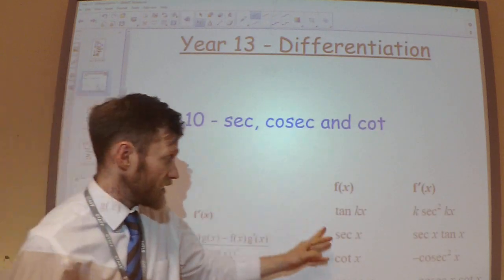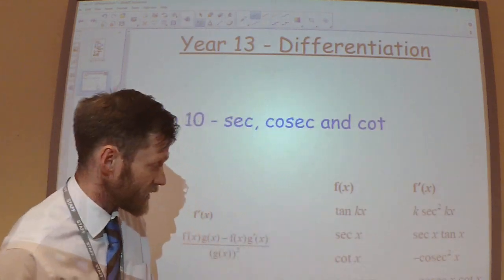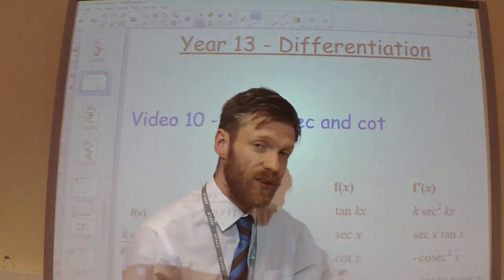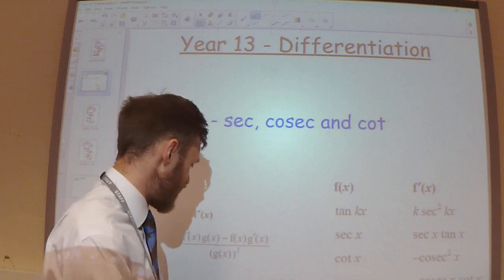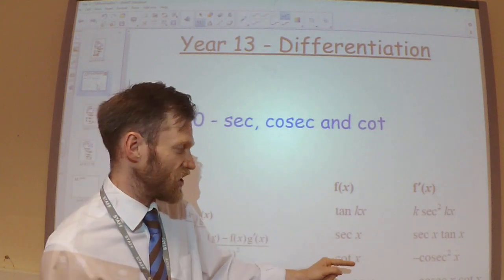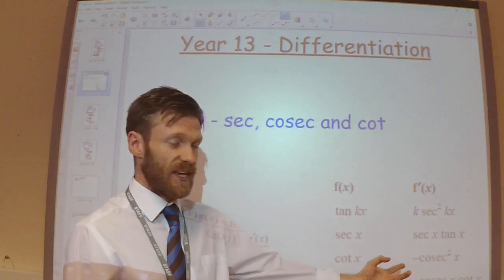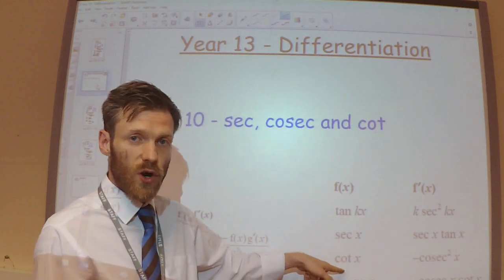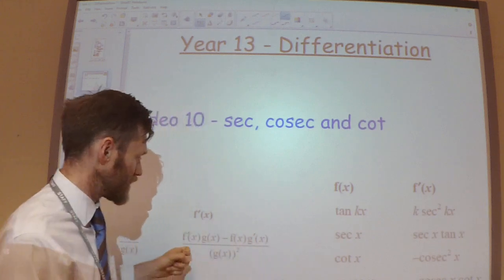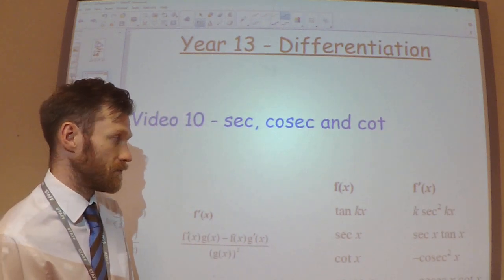So again, we've proved that sec differentiates to give sec x tan x. We've proved that cosec differentiates to give minus cosec x cot x. And I'm not going to do it in this video, but you can do it yourself if you want to prove that cot x differentiates to give minus cosec x squared. Just write cot as being cos over sine, and then do the quotient rule to differentiate it.